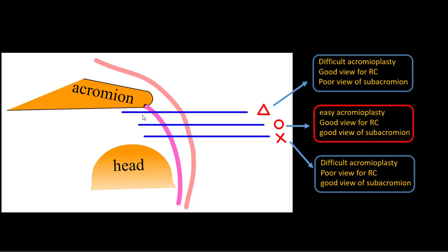From there, if you want to look up with a 30-degree scope, it's too difficult to see the surface of the acromion because it's too close.